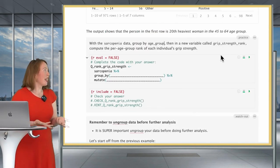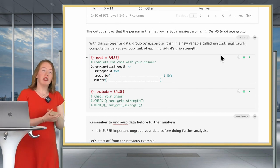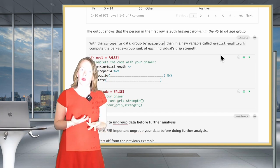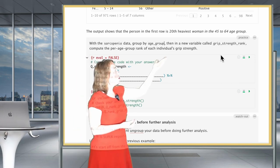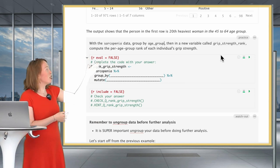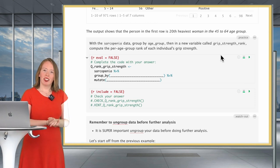So now it's your turn to practice. You'll be using the sarcopenia data set. You'll be grouping by age group and creating a new variable called group_strength_rank, which is going to rank per age group each individual's grip strength.